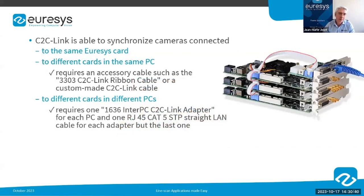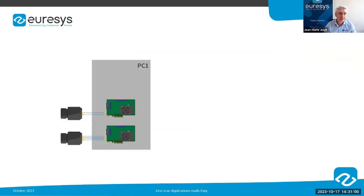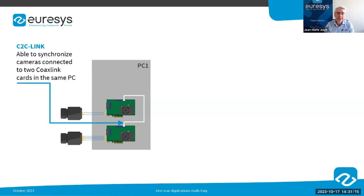C2C-Link can accurately synchronize cameras connected to the same frame grabber, to different frame grabbers in the same PC, or even to frame grabbers in different PCs. Dedicated accessories are provided for each scenario. For example, two cameras connected to two frame grabbers in the same PC are synchronized simply by connecting a dedicated flat cable between the C2C-Link connectors of both frame grabbers.